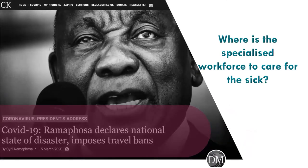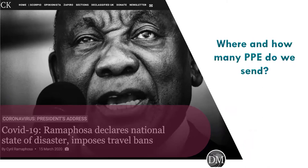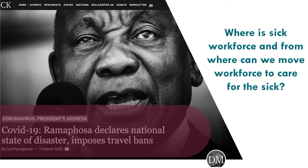Immediate questions from the national coronavirus command council concerned the workforce that would care for the sick — requiring information on how many healthcare workers we have within each facility, and identifying where our specialists are, such as intensive care health workers. To support procurement and distribution planning, there was an urgent need to know how much personal protection equipment would be required and where stock needed to be directed. As the virus spread, infected healthcare workers were rising rapidly and we needed to respond to where they were and how remaining staff could be redistributed.